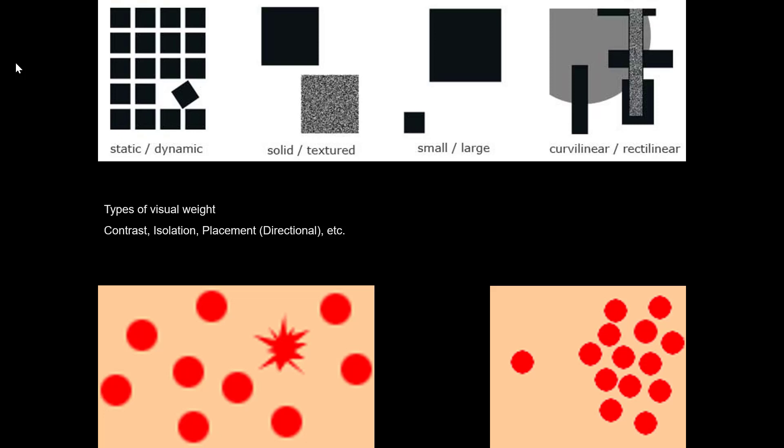We're going to talk about emphasis and really what we're doing is building on a lot of the same kinds of visual weight conversations that we were having when we were talking about balance.